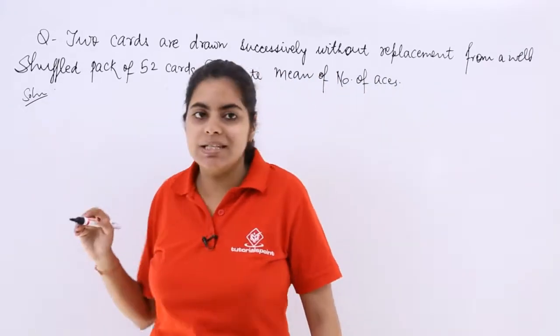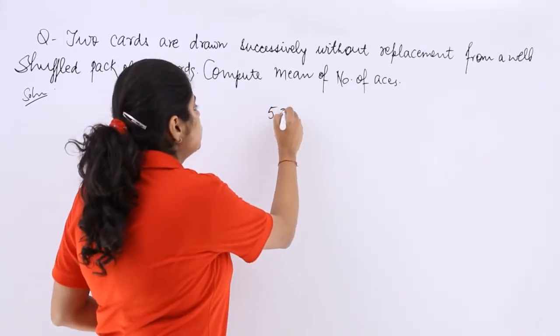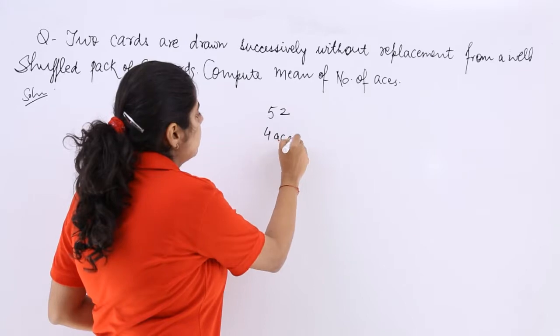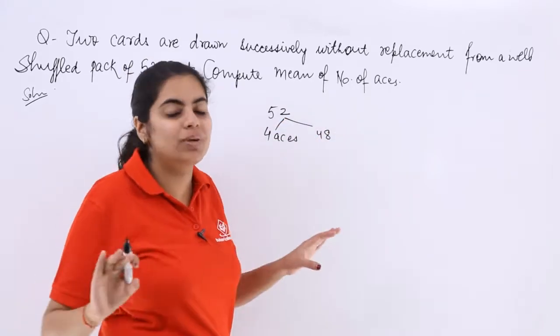In a well shuffled pack of 52 cards we have 4 aces and 48 are the other cards which are not including any ace.